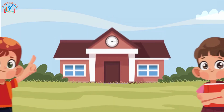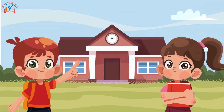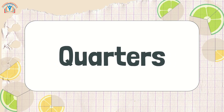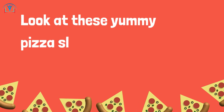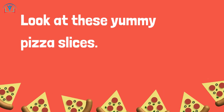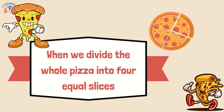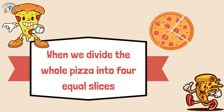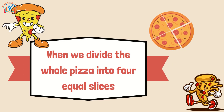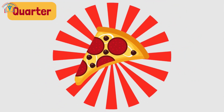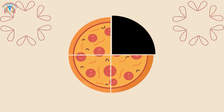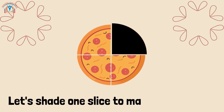But wait, there's more! Let's talk about quarters. Look at these yummy pizza slices. When we divide the whole pizza into four equal slices, each slice is called a quarter. Let's shade one slice to make it a quarter.